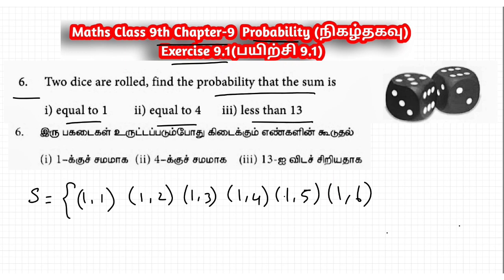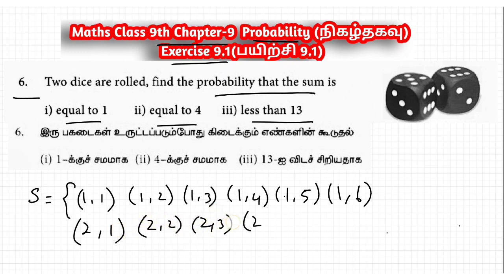For one die roll the sample space has 1 number. For two dice, the sample space expands. When the first die shows 2: (2,1), (2,2), (2,3), (2,4), (2,5), (2,6).